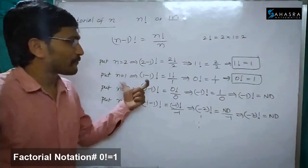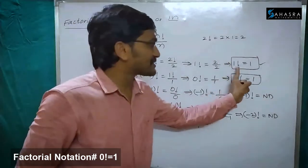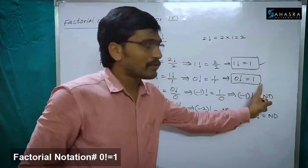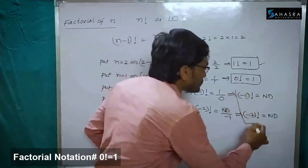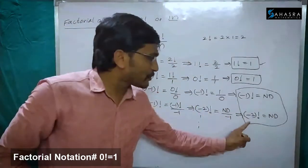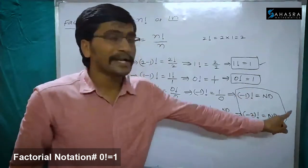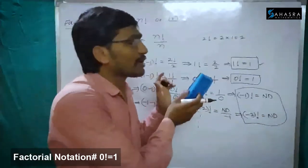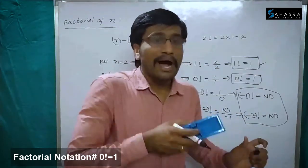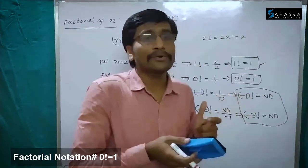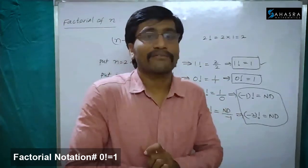So from this we conclude: the factorial of 1 is nothing but 1, the factorial of 0 is nothing but 1, and the factorial of negative numbers is not defined. This is about factorial of a number and how we can prove 0 factorial is equal to 1, and 1 factorial is equal to 1, and the factorial of negative integers is not defined. If you like this video please subscribe the channel and press the bell icon for getting more videos. Thank you.